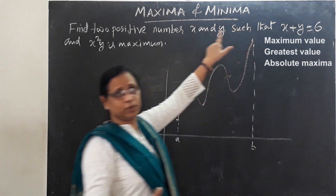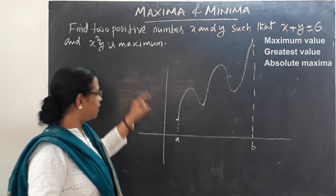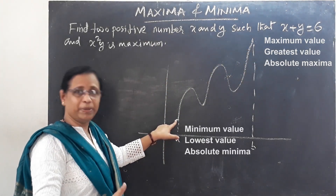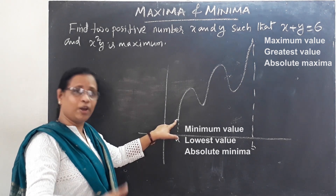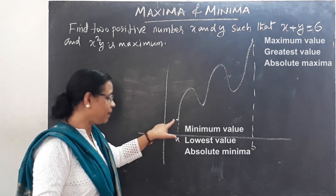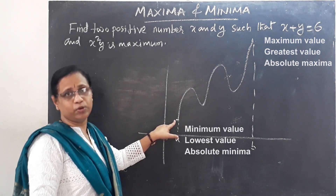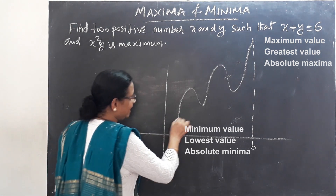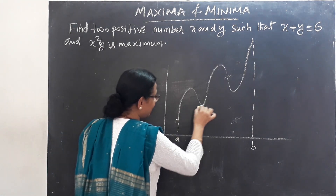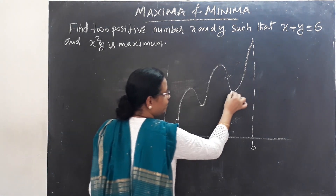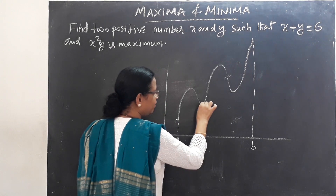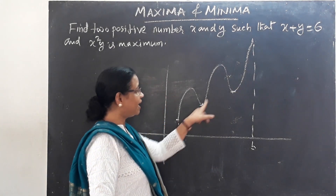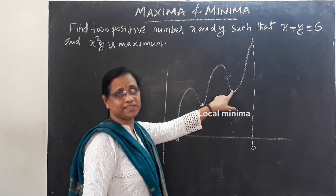This is the absolute maximum. What is the name of this other point? Absolute minimum — the lowest value, the minimum value. In this case, we say that these two points are local minimum points.